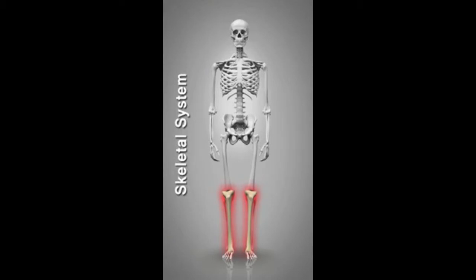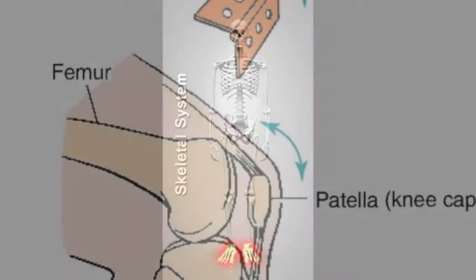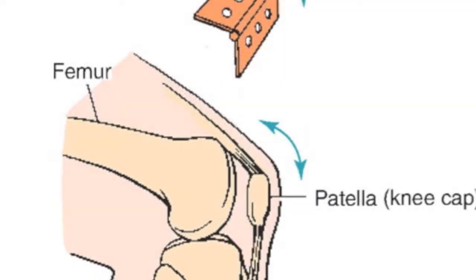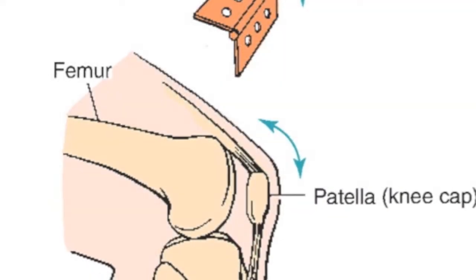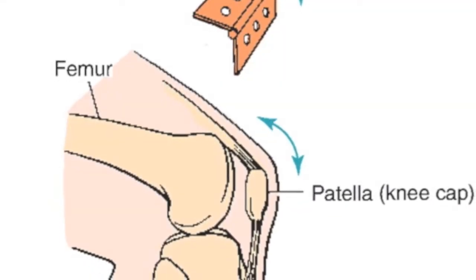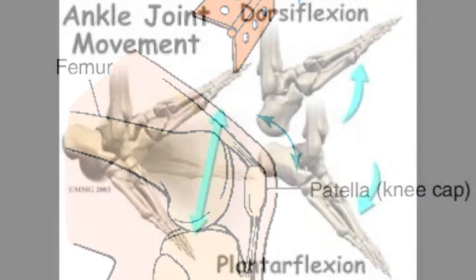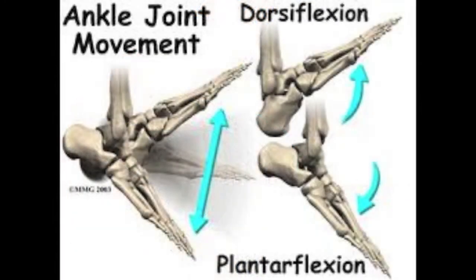Some of these bones include my tibia and fibula in my lower leg and my tarsal and metatarsal bones in my foot. Along with my bones, the hinge joints in my ankle and my knee allow my leg to bend and move as I run and eventually move my leg in preparation for receiving the ball.